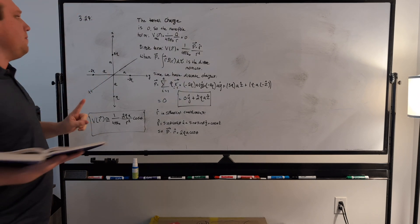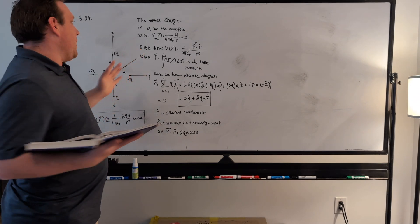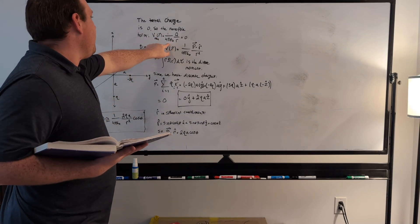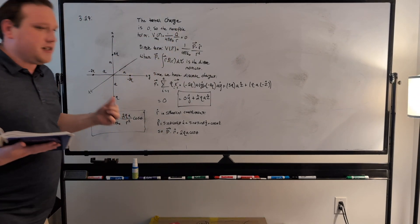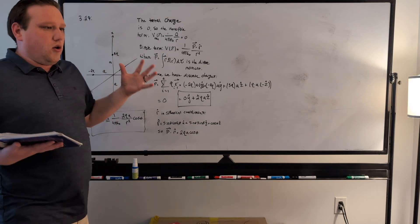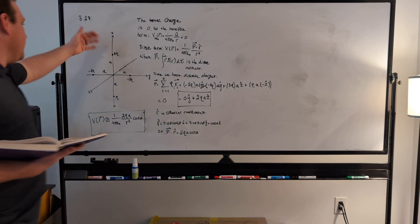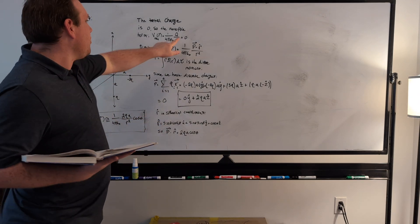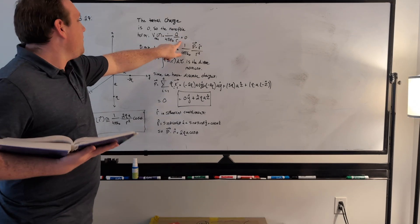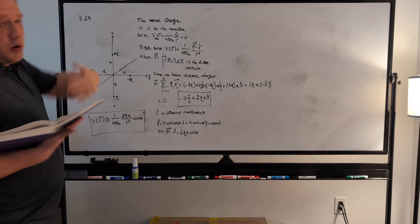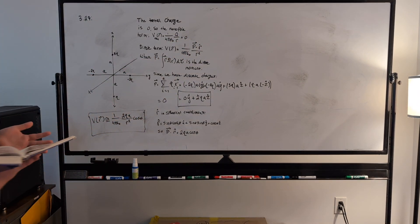But the monopole term of the multipole expansion is just 1 over 4 pi epsilon naught, and in this case our integral goes away, it's just the summation because we're using discrete terms. Our monopole term is just the total charge divided by r, and the total charge is zero, so the monopole term goes away.